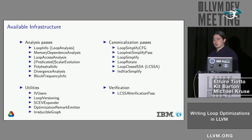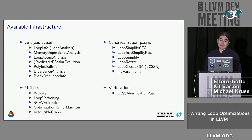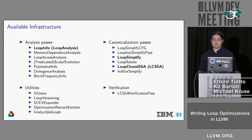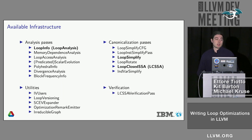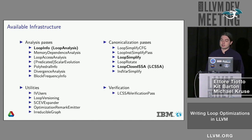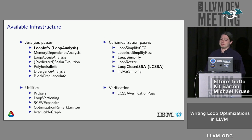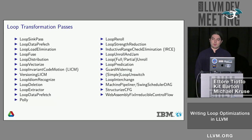LCSSA is one part of the infrastructure provided by LLVM. Other useful classes when writing a loop pass include loop info — in the form of loop analysis for the loop pass manager — which determines the natural loops in the program. There is the loop simplified pass, which ensures the normal form explained earlier, and the loop closed SSA form. These three passes are implicitly added by the loop pass manager whenever your loop pass is executed, so you can assume your loop has this normal form.